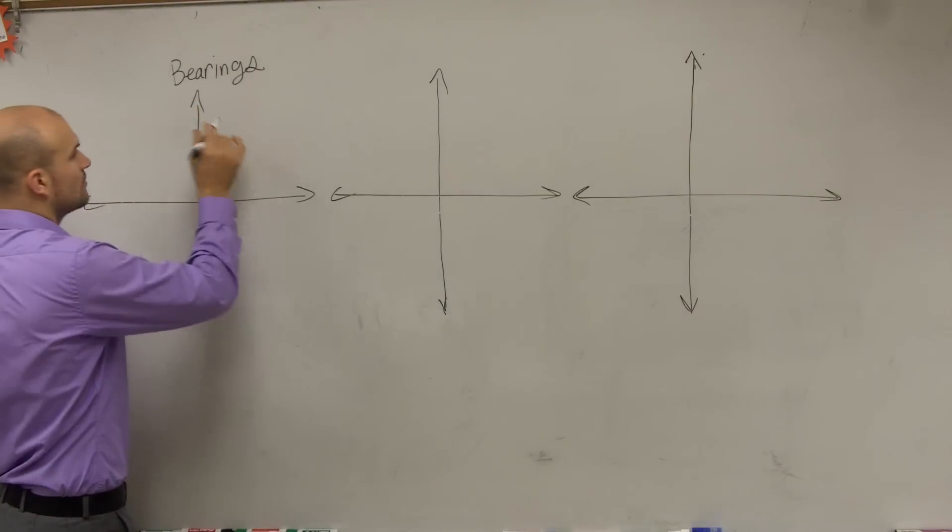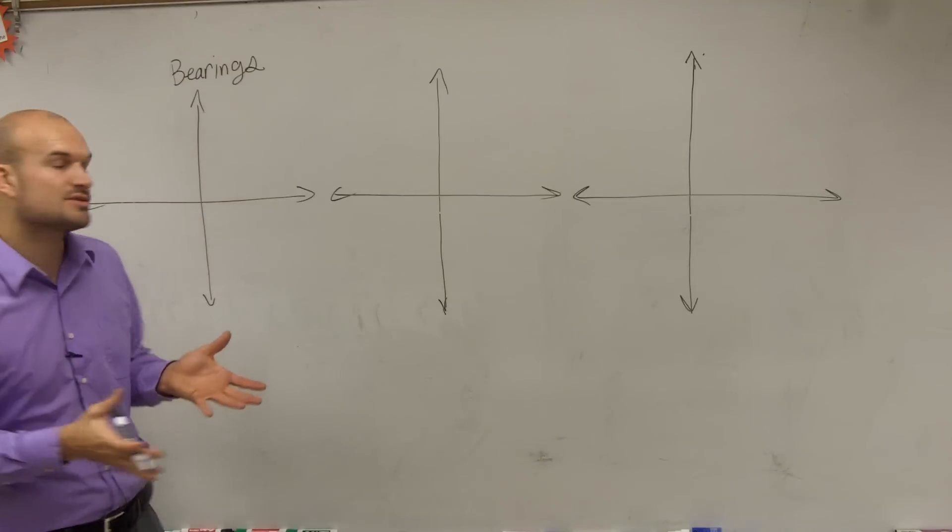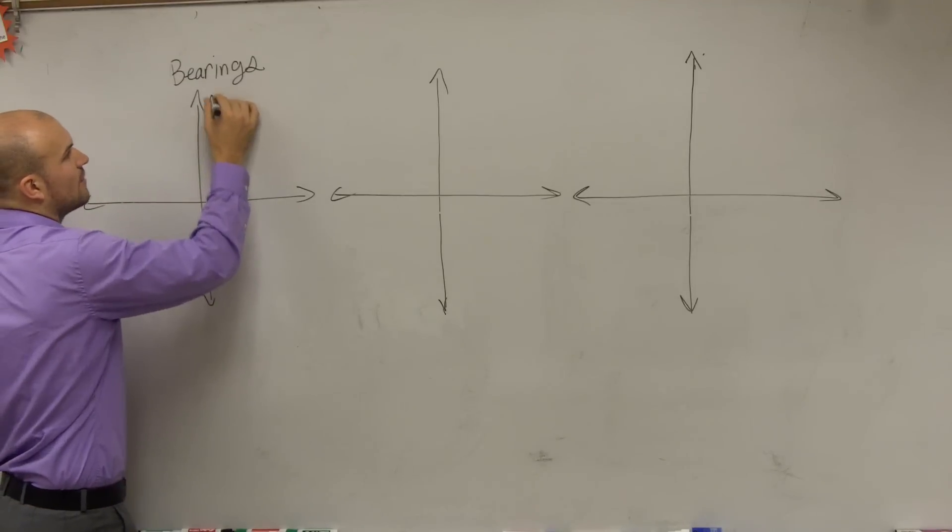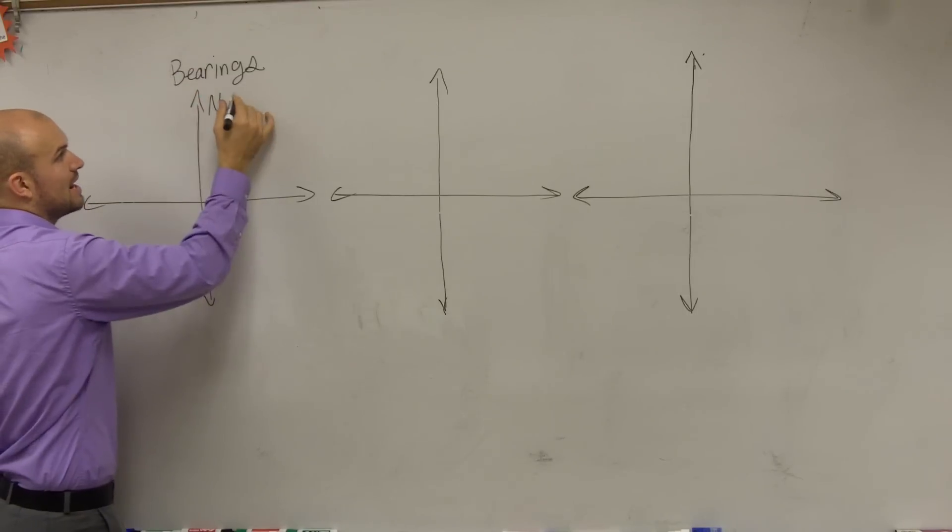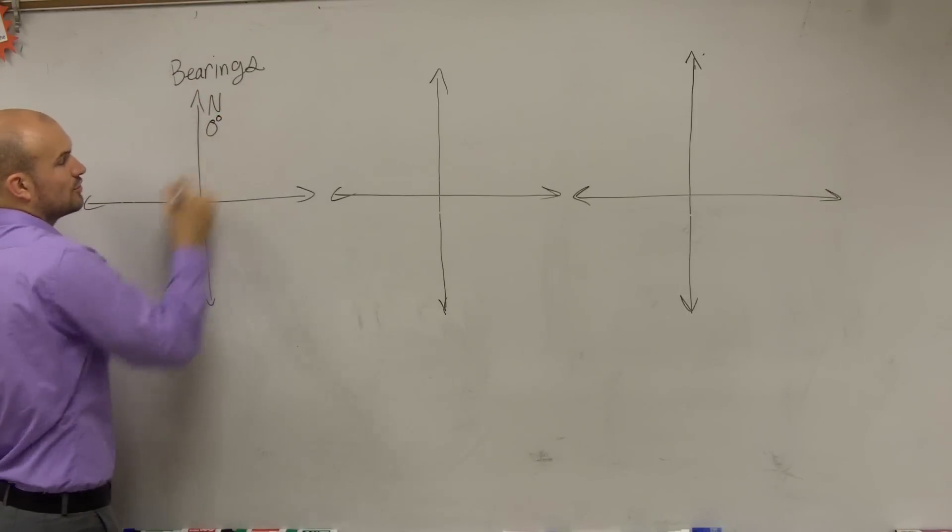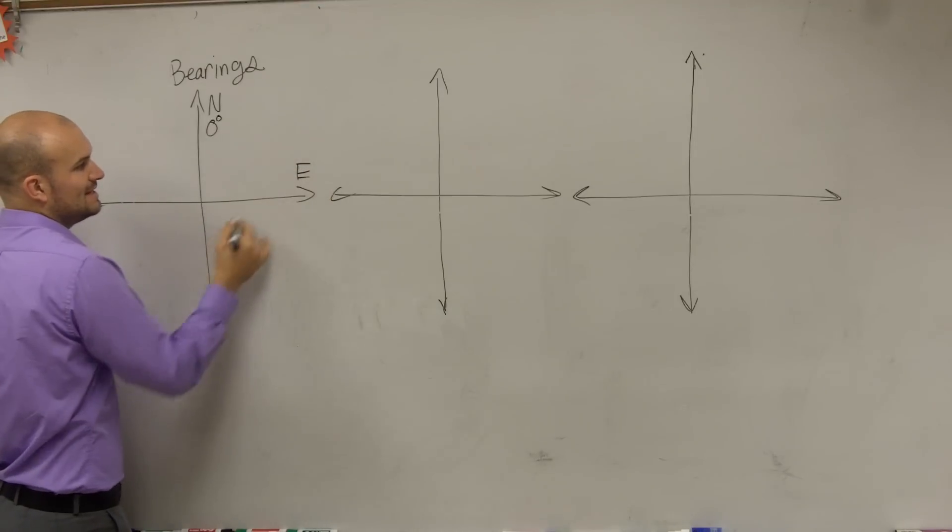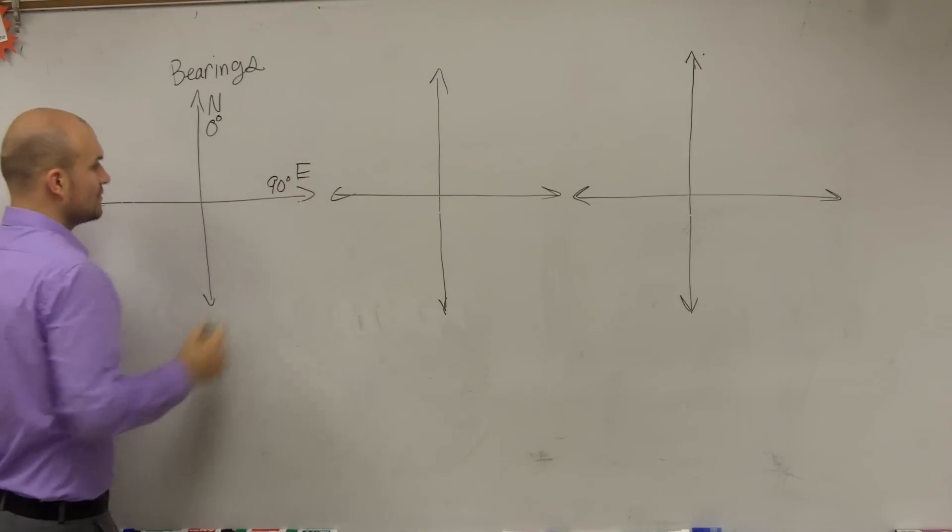Well, our bearings, when I'm talking about giving you directions using bearings, we're always going to have our north is going to be always up top, which will be at zero degrees. Then you're going to have east, which would be 90 degrees.